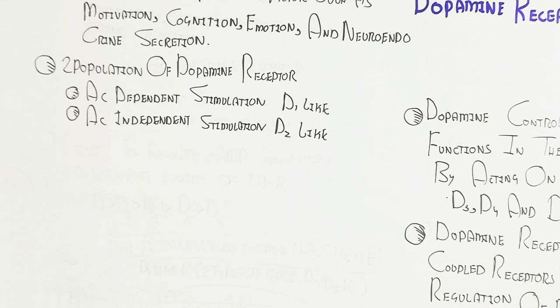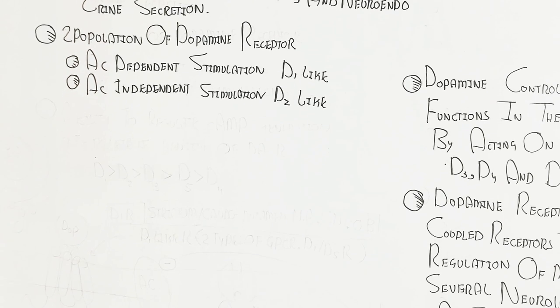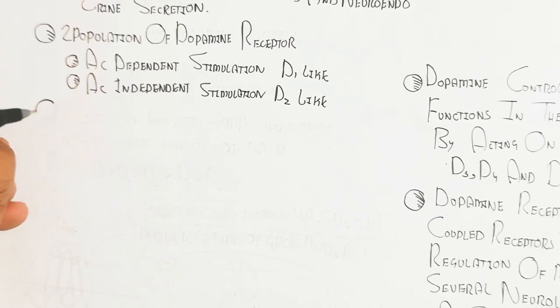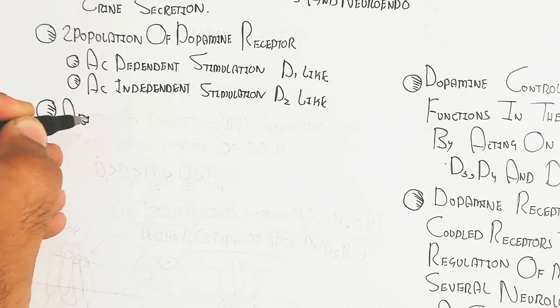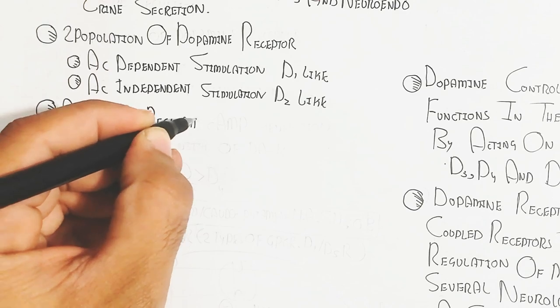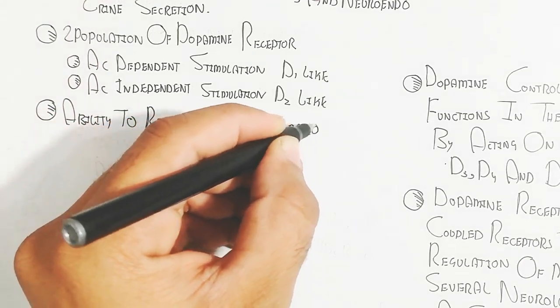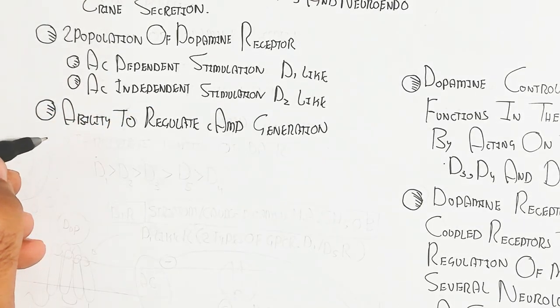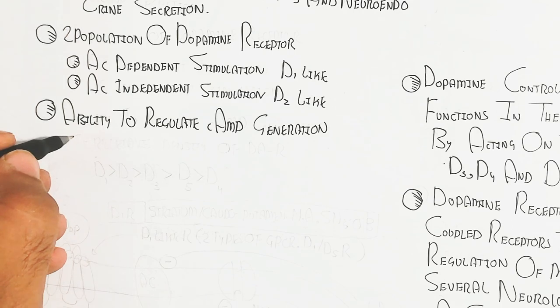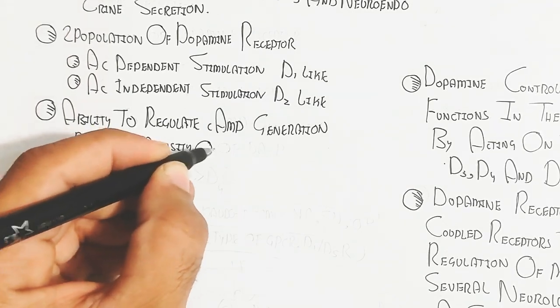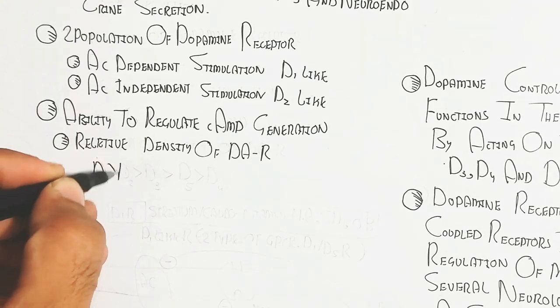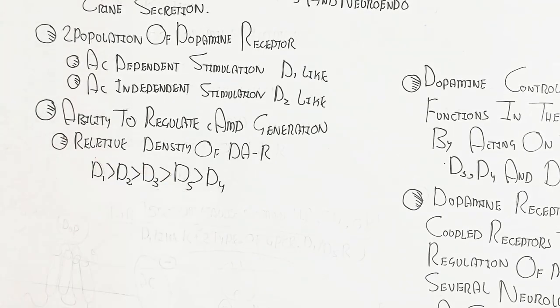There are two populations of dopamine receptors: adenylate cyclase dependent and independent stimulation, D1-like and D2-like. The ability to regulate cyclic AMP generation: D1 has more ability than D2 and D3, then D5, and then D4, respectively.